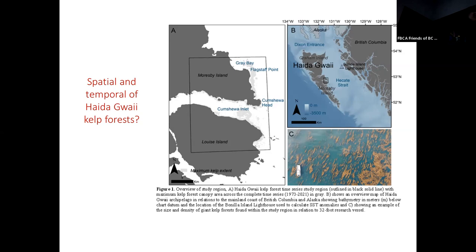This is Haida Gwaii, and we did a focus study here in Kaushua Inlet. We looked at how much kelp disappeared in this region over time. This is a drone image flying over a kelp bed — that's us doing fieldwork in a boat there. These are very large kelps in Haida Gwaii, quite beautiful — those are giant kelps. In the Strait of Georgia, we mostly have what's called bull kelp — very beautiful, but not as large as giant kelp.